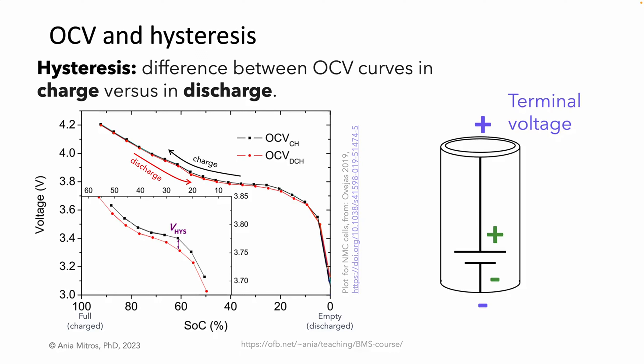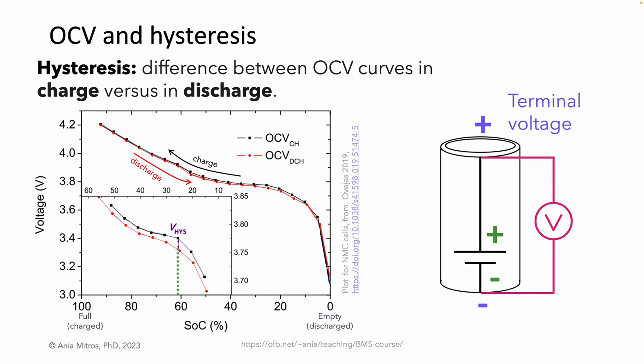Let's clarify what OCV during charging means, given that OCV is measured with no current flowing. For every point on the black charge curve, you would apply current to charge the cell, then stop the current and allow the cell to rest, and lastly measure the voltage of the rested cell with no current flowing. Notice the difference between the red and black curves — for a given state of charge, you will measure a slightly different open circuit voltage depending on whether you reached that SOC by charging or discharging. The difference between those two OCVs is the hysteresis, and it varies as state of charge changes.